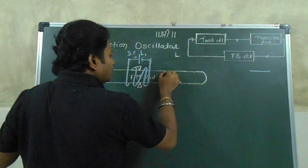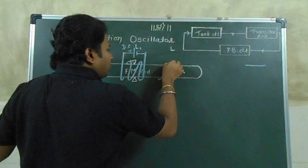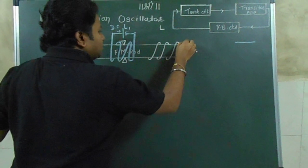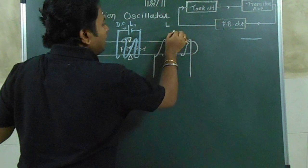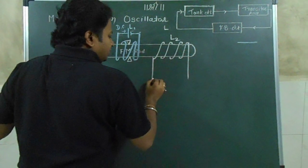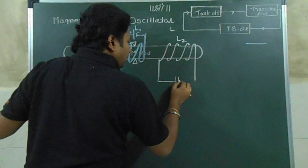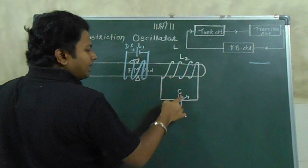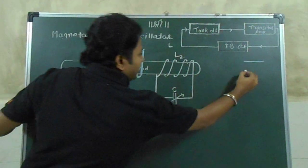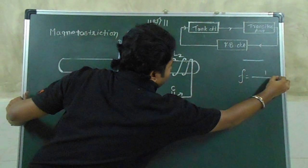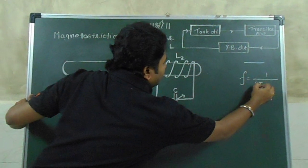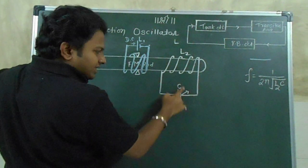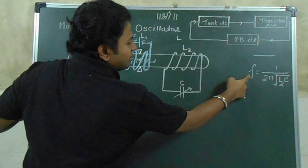We require one more coil, called L2, wound at the right end of the rod. This coil L2 is connected in parallel with a variable capacitor of value C. Coil L2 and the capacitor together form the tank circuit. The frequency of this tank circuit is given by f = 1 / (2π√(L2 × C)). By adjusting the value of C, you can adjust the frequency of the tank circuit.